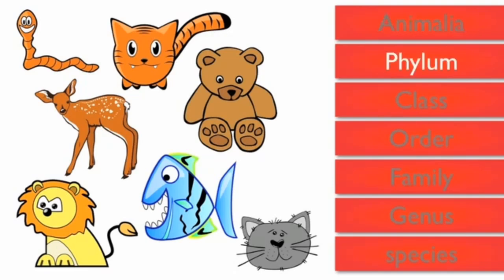The second level is phylum, the phylum of lion is chordata. It means the animal with the backbone, so the worm is eliminated.